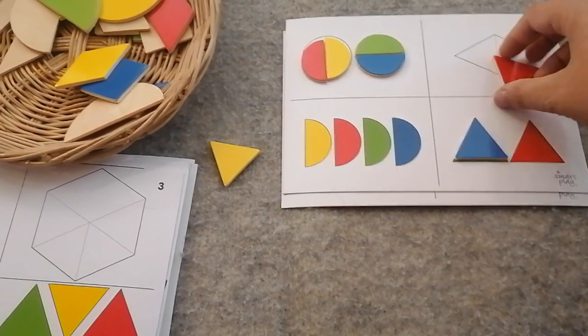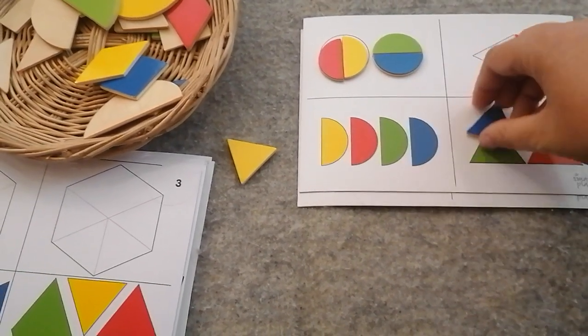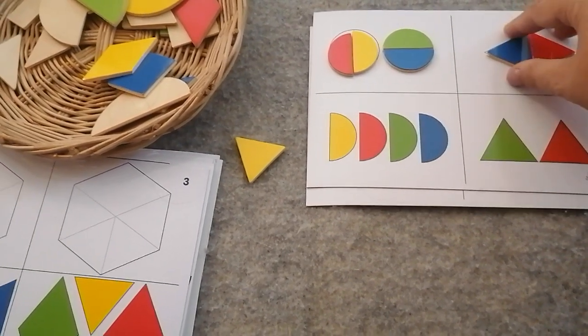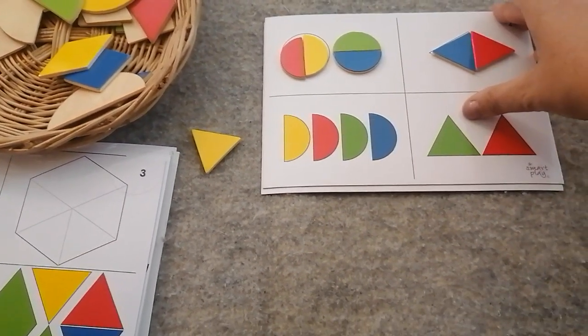So I'm going to take these two triangles and put one here, one here, and one here. And together, two triangles make a diamond. That's what happens.